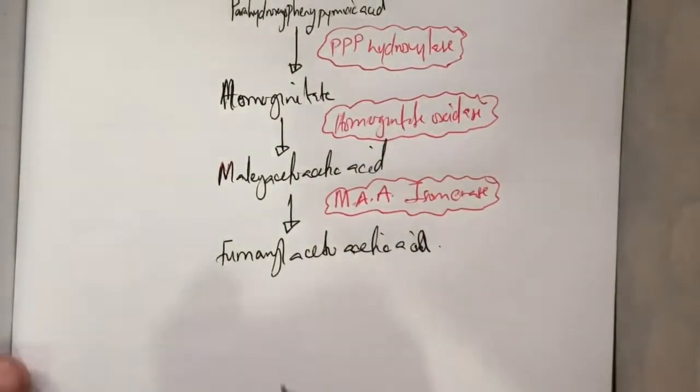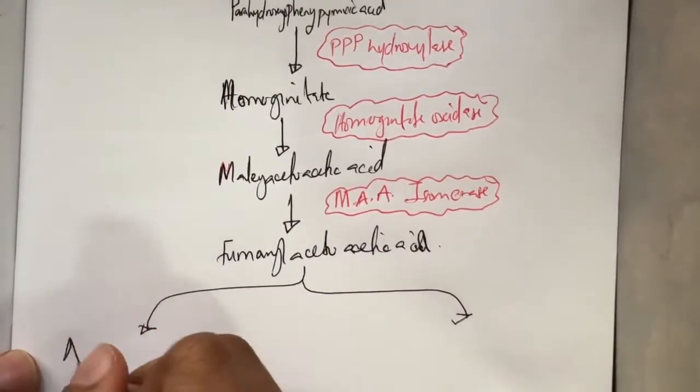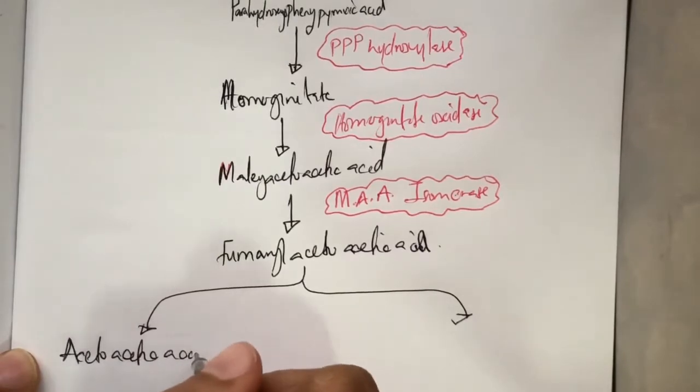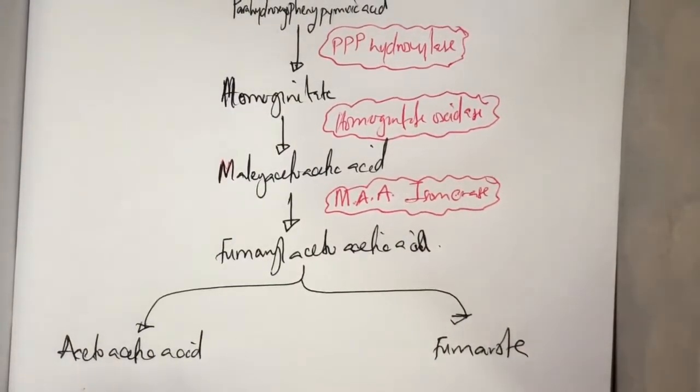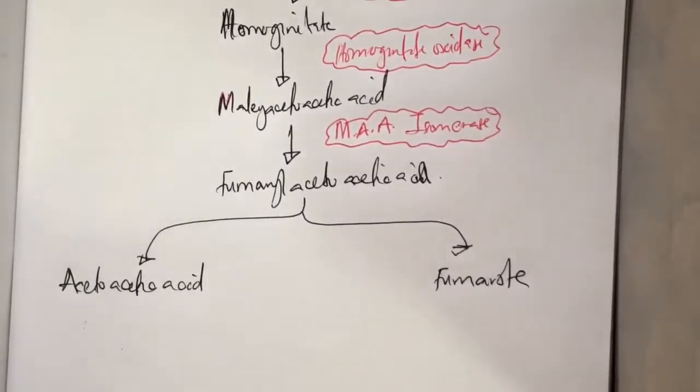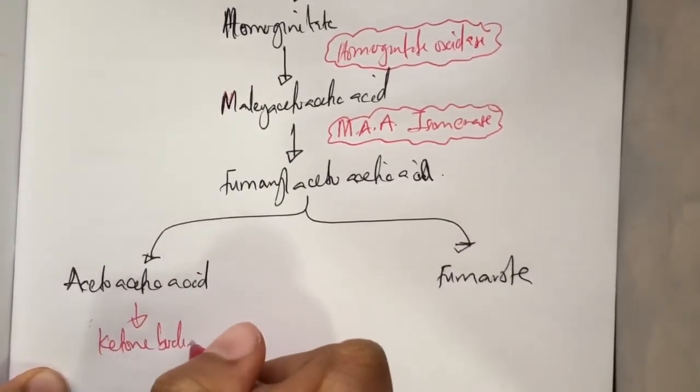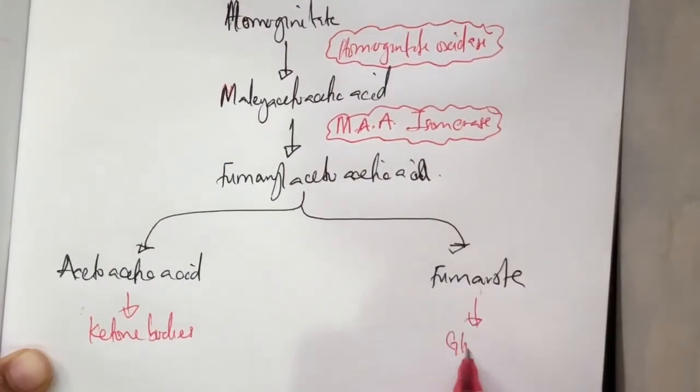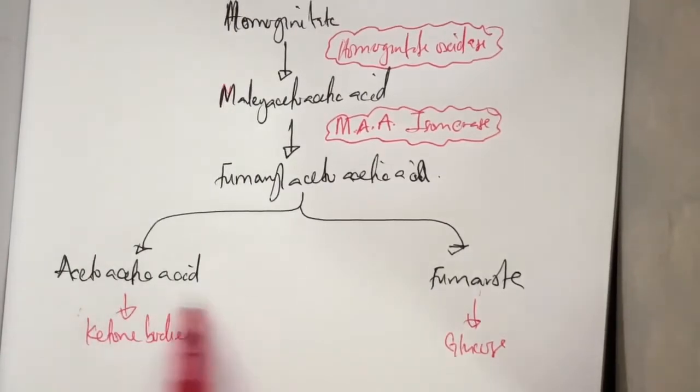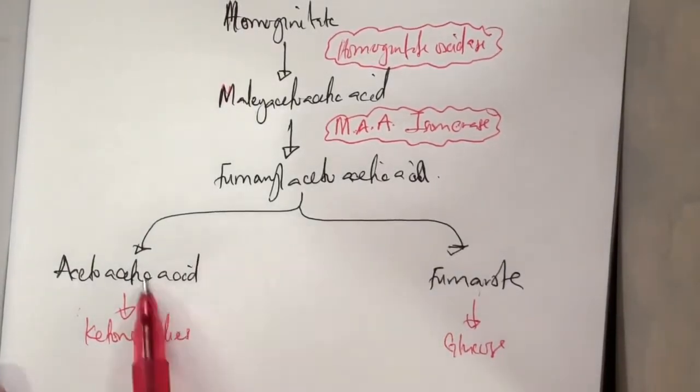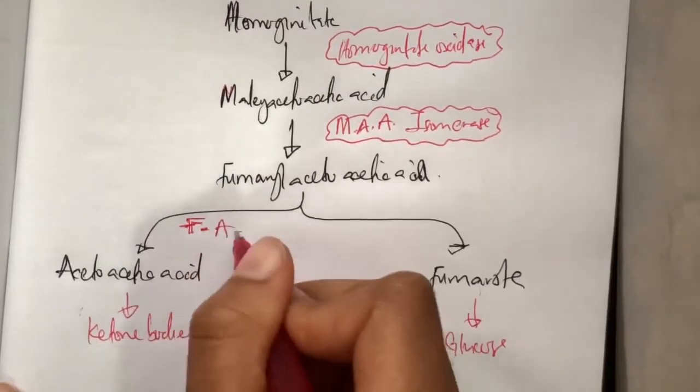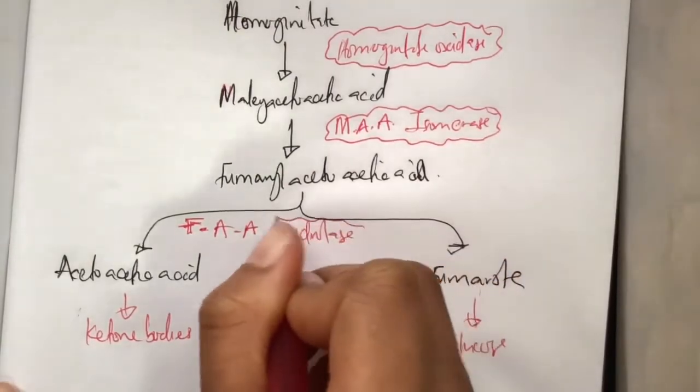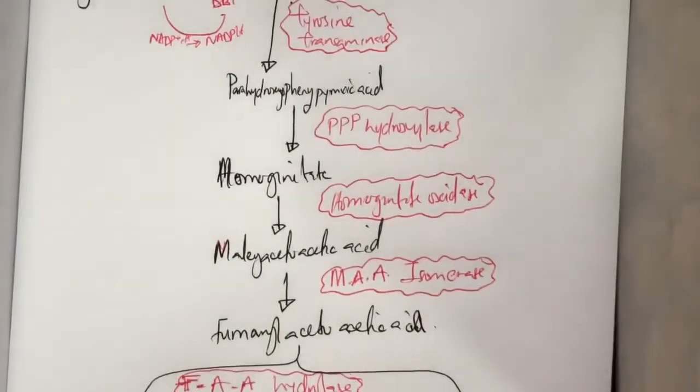And fumarylacetoacetic acid is then breaking down into two: one is acetoacetic acid, the second one is fumarate. And if you can remember, acetoacetic acid is used in the production of ketone bodies, and then fumarate is for glucose. It goes to the Krebs cycle and produces glucose. This goes to ketogenesis to ketone bodies. The enzyme that breaks this fumarylacetoacetic acid to fumarate and acetoacetic acid is known as fumarylacetoacetate hydrolase.